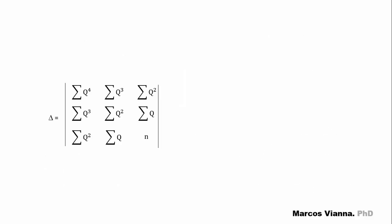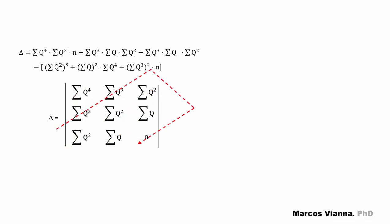This is the determinant delta, whose value we find by multiplying the values of this diagonal, plus the product of these values, plus the product of these values, minus the product of these values, minus the product of the values of this diagonal, plus the product of these values, and plus the product of these values.